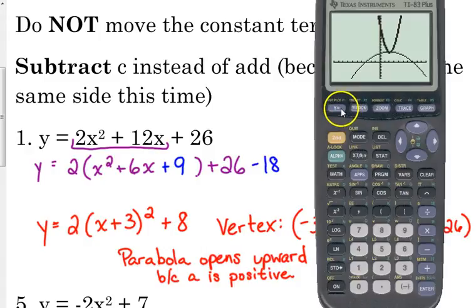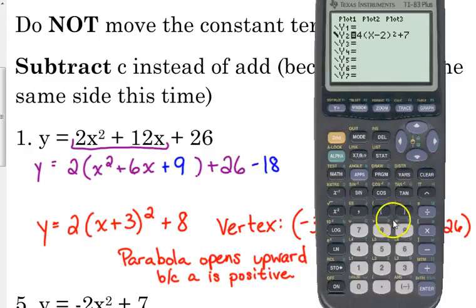Plug it into your y equals. Plug the original function into y1, 2x² + 12x + 26. And then in your y2, plug your vertex form in.